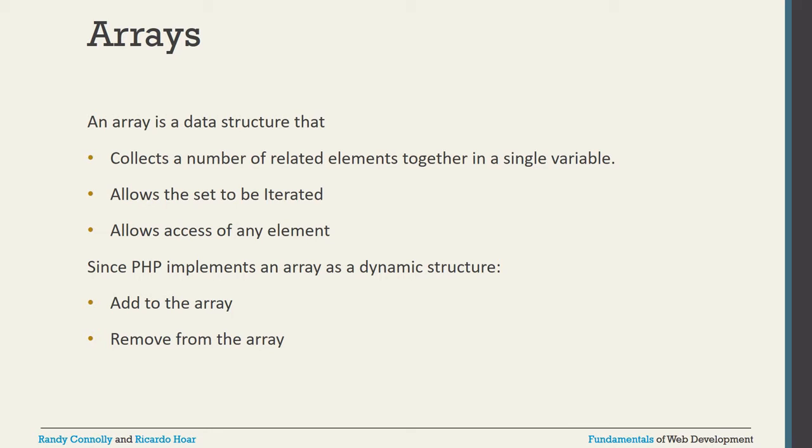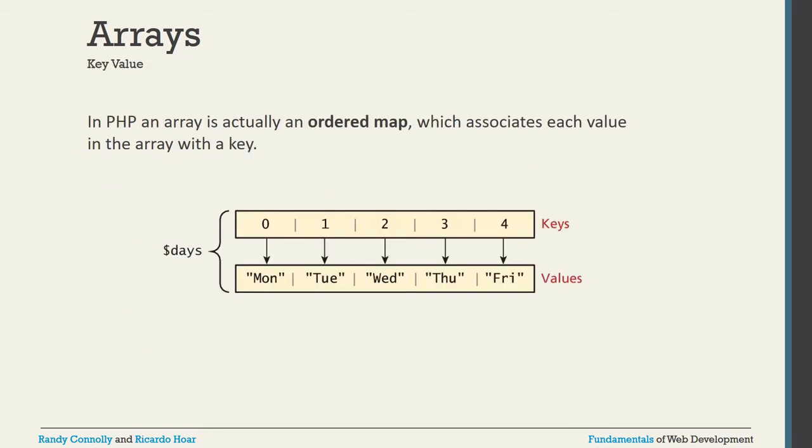PHP implements an array as a dynamic structure, so you can add to the array and remove from the array — these are two extra things available in PHP. If you are talking about the PHP array, it is like an ordered map, which associates each value of the array with a key.